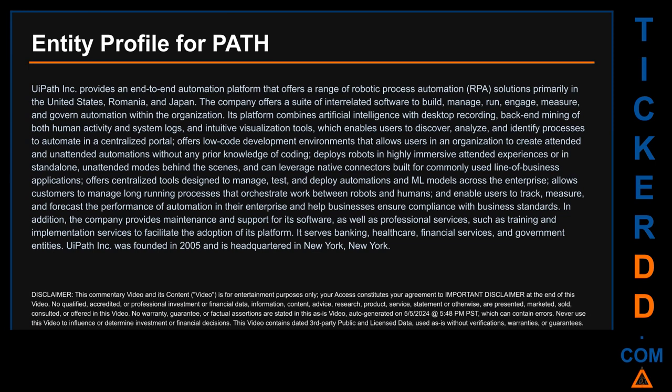Hello, my name is Carl. I searched the public web to find information about the company behind this ticker. UiPath Inc. provides an end-to-end automation platform that offers a range of robotic process automation (RPA) solutions, primarily in the United States, Romania, and Japan. The company offers a suite of interrelated software to build, manage, run, engage, measure, and govern automation within the organization. Its platform combines artificial intelligence with desktop recording, back-end mining of both human activity and system logs, and intuitive visualization tools, which enables users to discover, analyze, and identify processes to automate in a centralized portal.